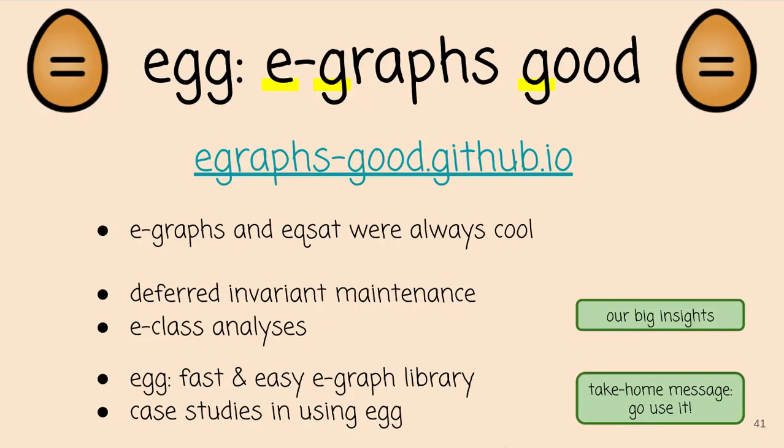That's EGG. Hopefully you're convinced that E-graphs are good. Our take-home message: if you have a problem with an expression on the left-hand side and you want to turn it into something better, or figure out if two expressions are equal, you should really consider using equality saturation or EGG. There's a website with more information. Thanks for listening.